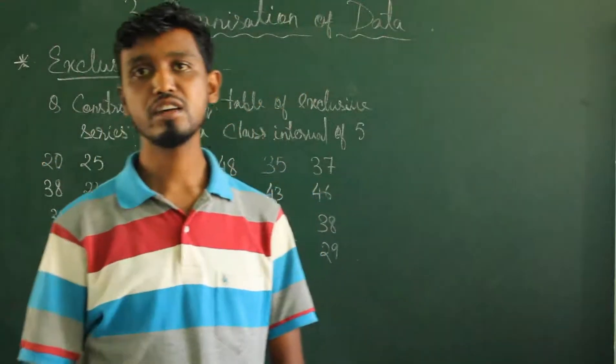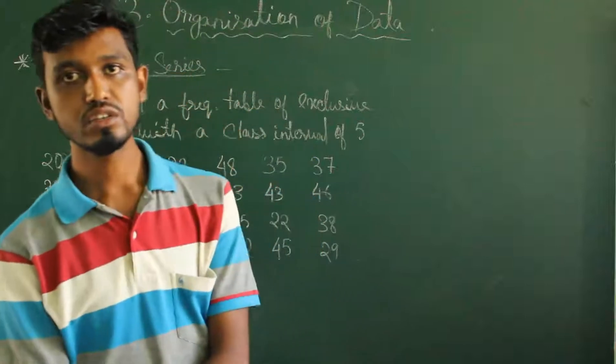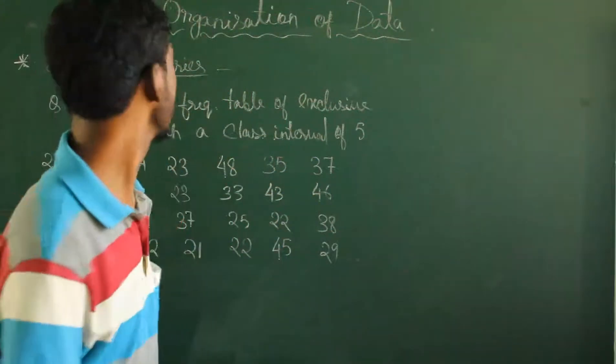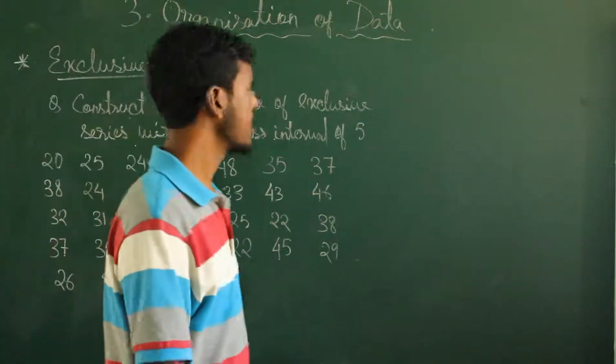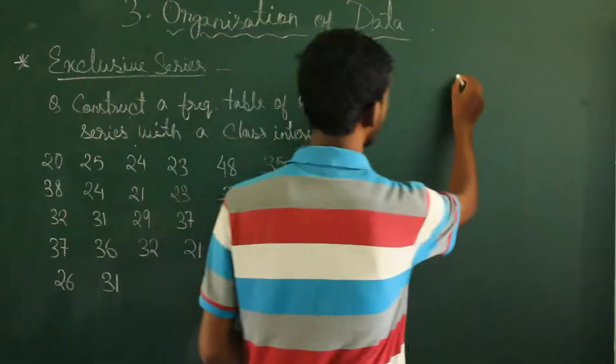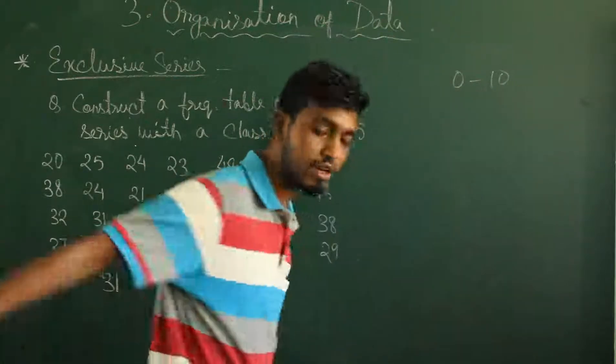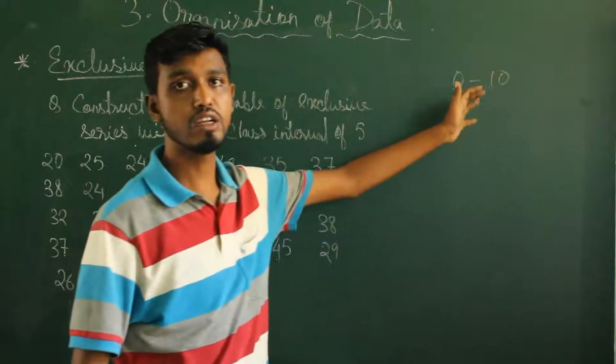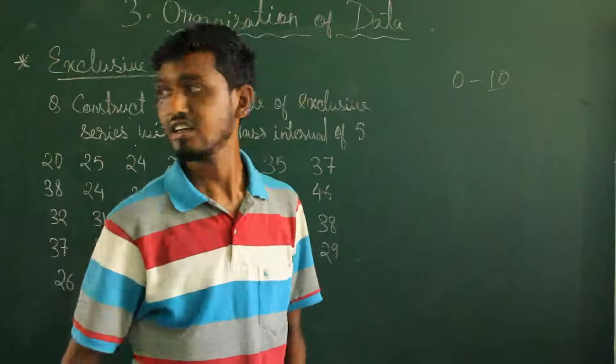So hello students, in our last class we have discussed about different types of continuous series. So today we are going to discuss one type of continuous series, that is exclusive series. In exclusive series what happens is that you have a range set, this is 0 to 10, and here lower limit, upper limit. In exclusive series the upper limit is excluded.